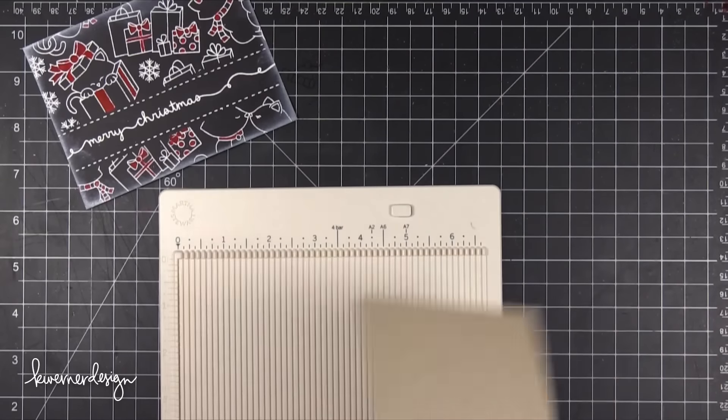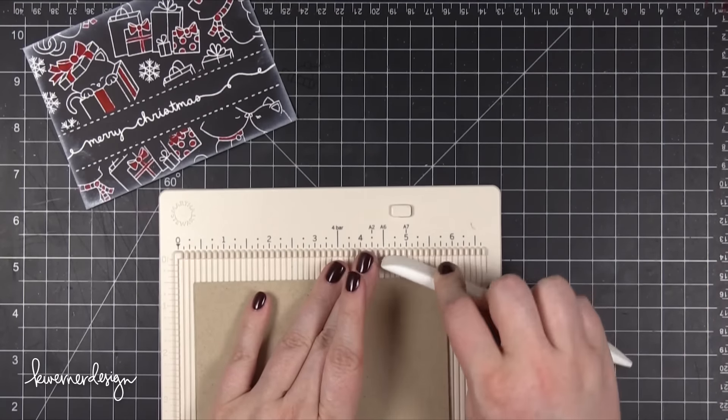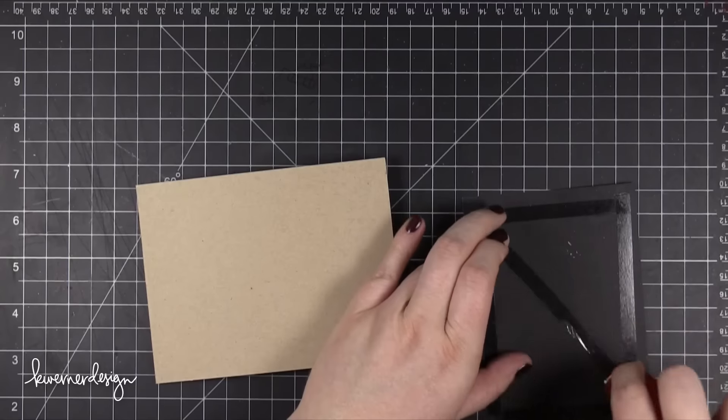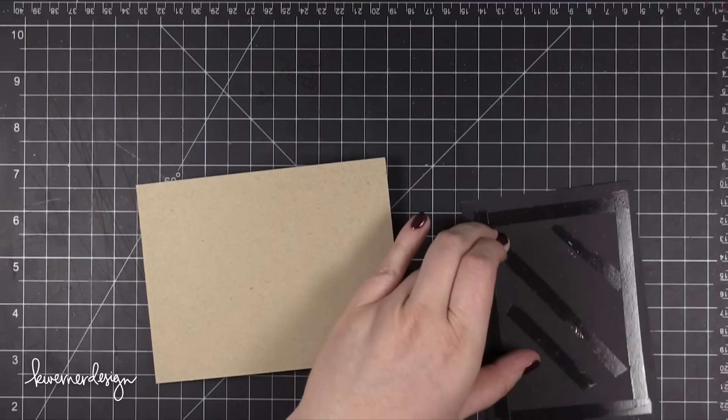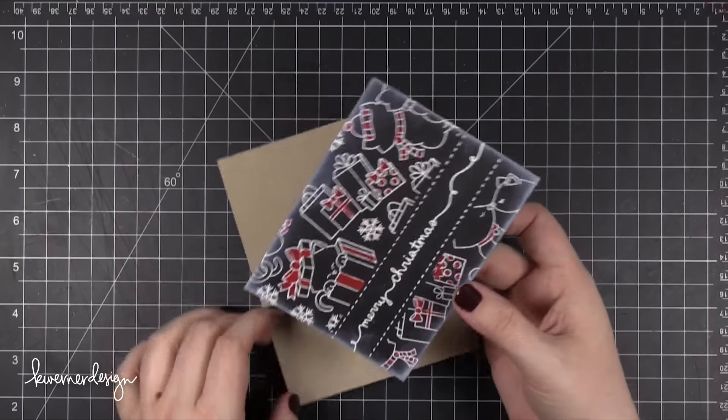My card base is made out of Neenah Desert Storm and it was scored at 5.5 to create a side folding landscape oriented card. Then put some adhesive on the back of my stamped piece and then press that down onto the card base.